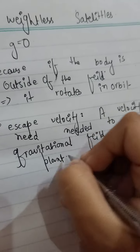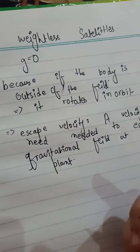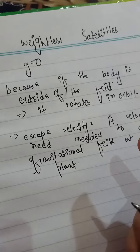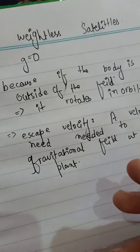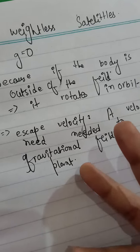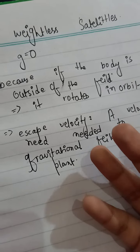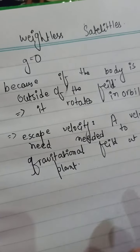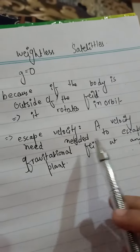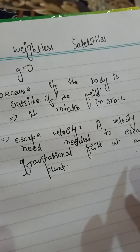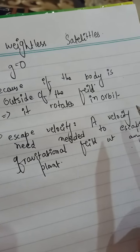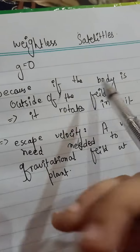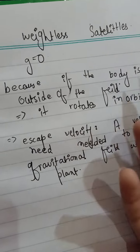When sending satellites from the Earth outside, I will also tell you the escape velocity of Earth — how much speed we give to satellites so they move outside of the Earth. Escape velocity simply means the velocity needed to escape from the gravitational field at any planet. Every planet has its own escape velocity.